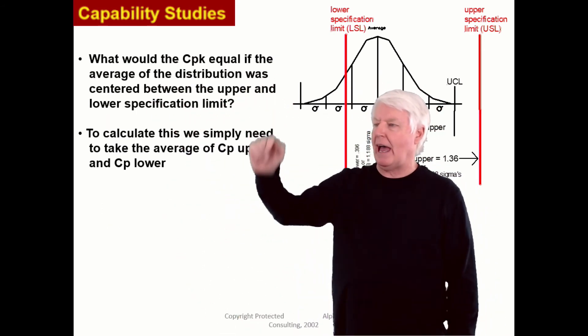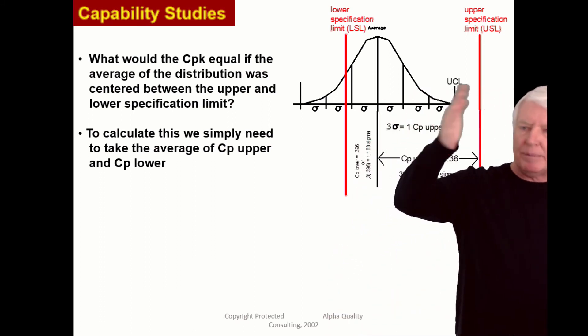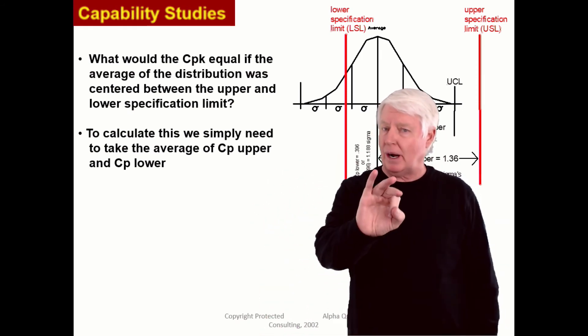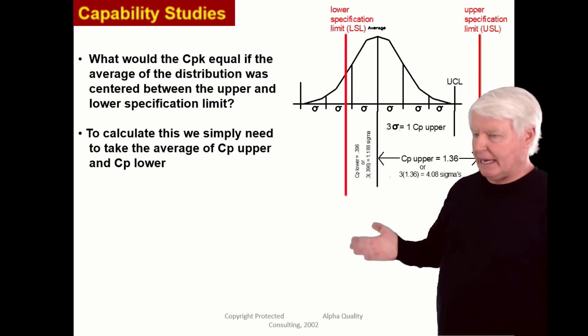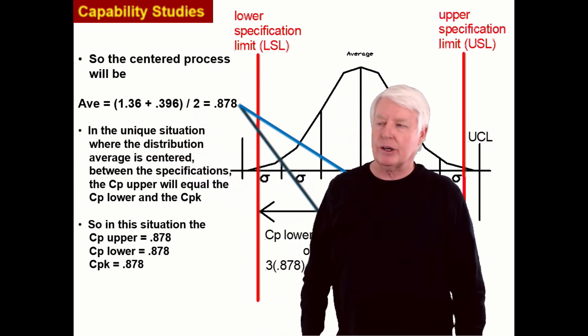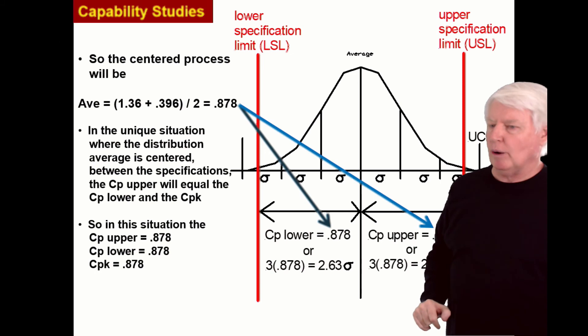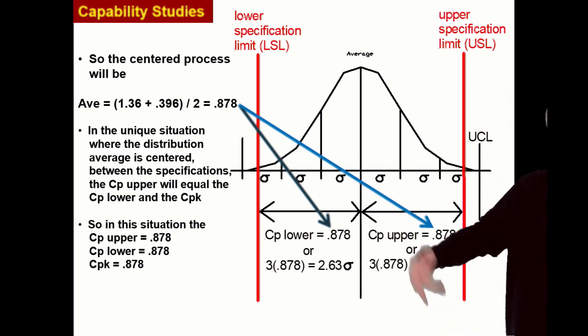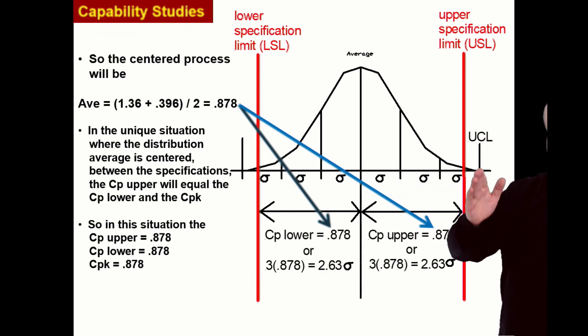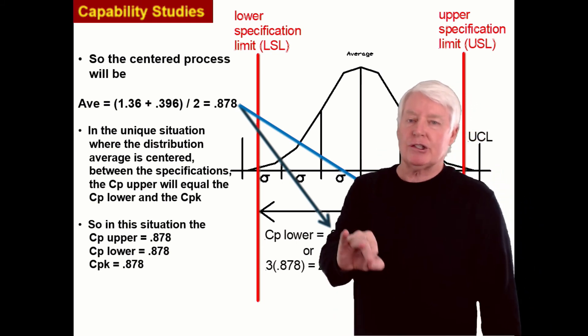What would the CPK equal if the average of the distribution was centered? So we took this average and we centered it so the distance between the average and the upper spec limit and the average and the lower spec limit were equal. The average is centered between the specs. For many processes, that's what you want it to be. So what would the CPK be if it was centered? Well, all we have to do is take the average of CP upper and CP lower, and that will answer the question. If we center this in between the specs, it will be a CP upper and a CP lower of 0.878. They'll be equal. Why? Because it's centered, so of course they're going to be equal. And if you multiply that by 3, that means there will be 2.63 sigmas to the upper spec limit and 2.63 sigmas to the lower spec limit. Very good. And the average of those two is the CP.